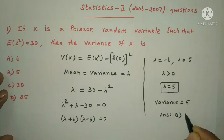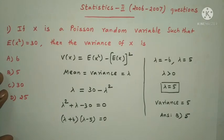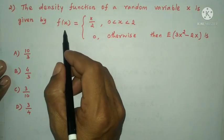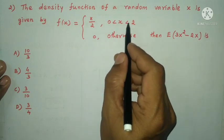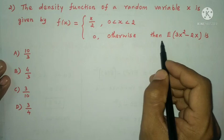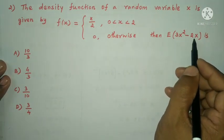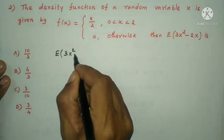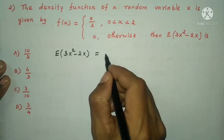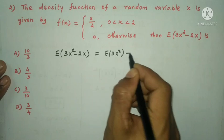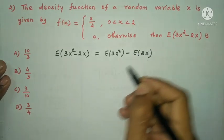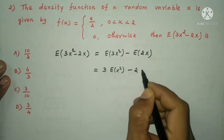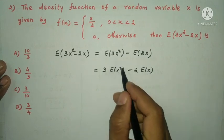Next question: the density function of a random variable X is given by f(x) = x/2 for 0 < x < 2, 0 otherwise. Find E(3x² - 2x). That is expectation of 3x² - 2x, which equals 3·E(x²) minus 2·E(x).